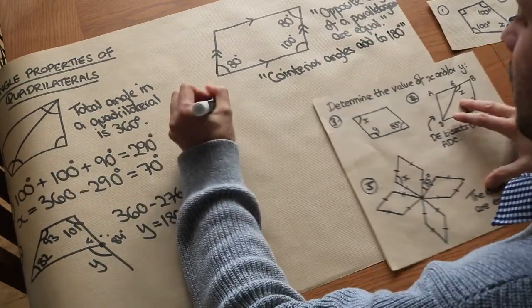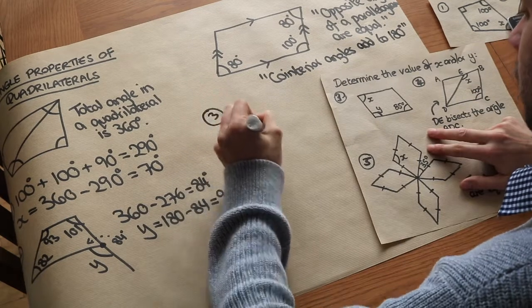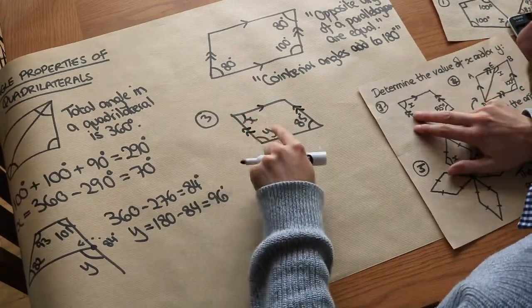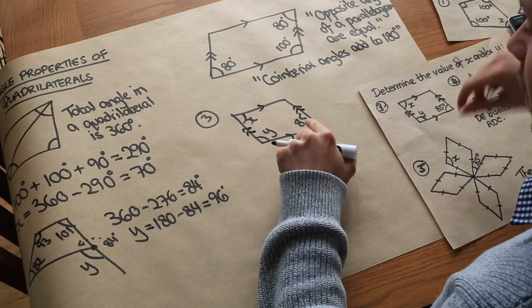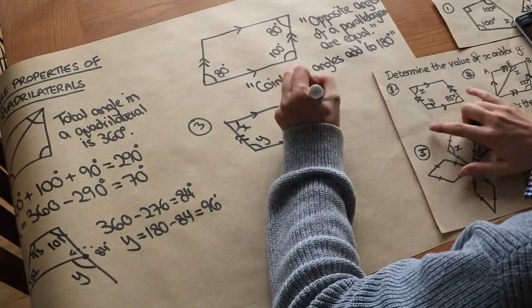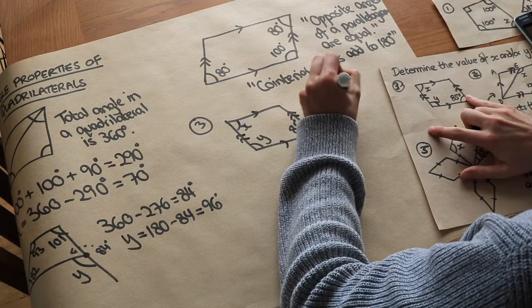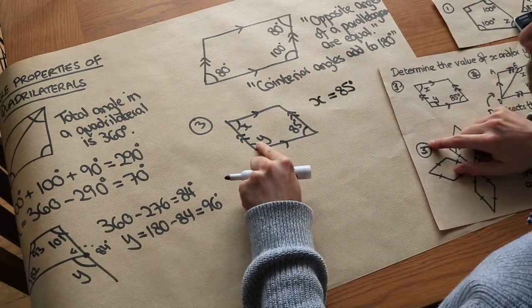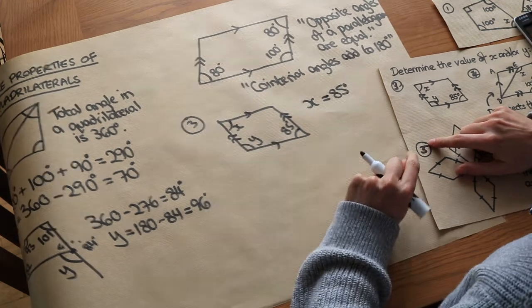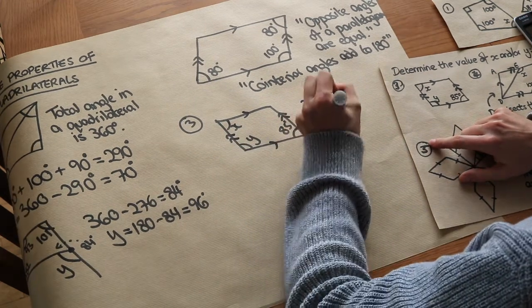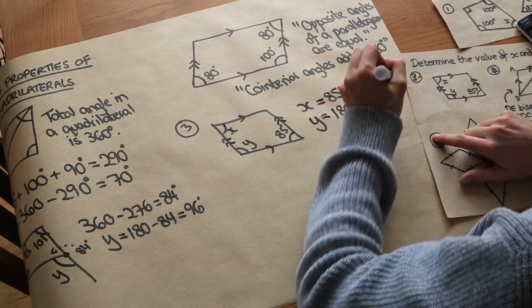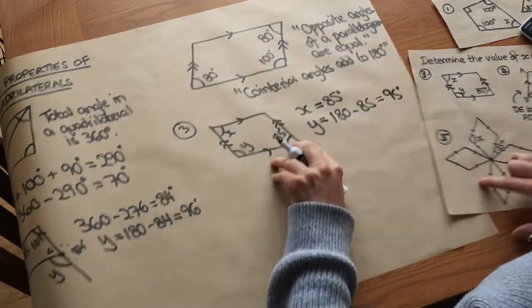Let's solve the first parallelogram problem. We can find x first, because x is the opposite angle to 85 degrees, so x equals 85 degrees. Then y is a co-interior angle, so y equals 180 minus 85, which is 95 degrees.